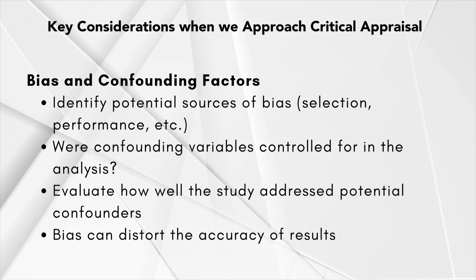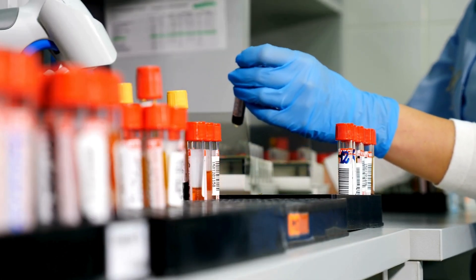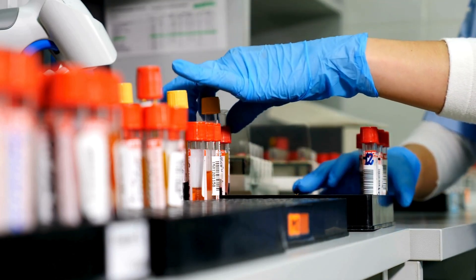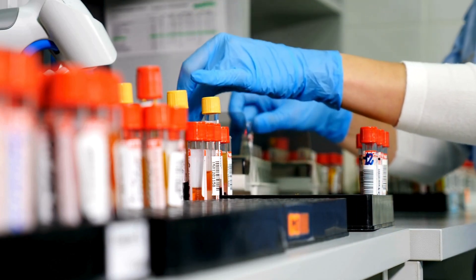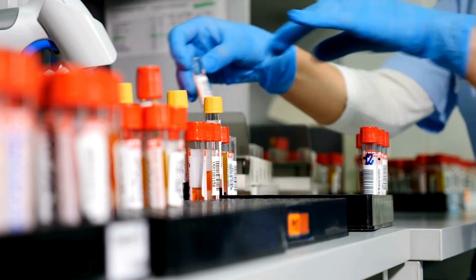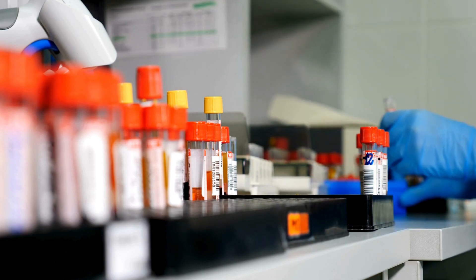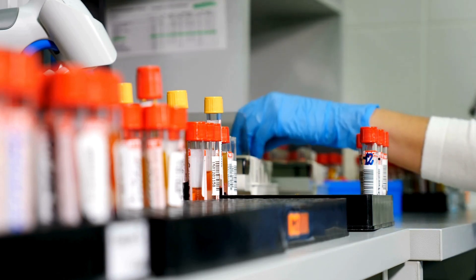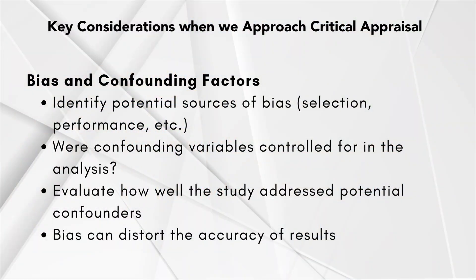Similarly, confounding factors — variables that could influence both the exposure and outcome — need to be identified and accounted for. For example, in trials comparing treatment groups, any differences between groups not related to the treatment, such as age or comorbidities, could confound the results. It's essential to assess whether the study design and statistical analysis adequately controlled for these confounders. Please check the latest tutorial about detecting and managing different types of bias in medical research — I will leave a link in the description below.